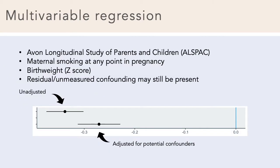For multivariable regression, I used data from the Avon Longitudinal Study of Parents and Children, or ALSPAC, and I looked at maternal smoking at any point during pregnancy as a binary variable, and birth weight measured in grams and converted into Z scores. This was a logistic regression model. The top effect estimate shows a completely crude effect estimate, and the bottom one shows the estimate adjusted for potential confounders: maternal age, parity, BMI, alcohol, socioeconomic status, and sex of the child.